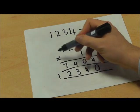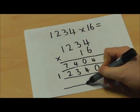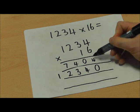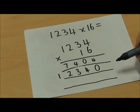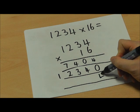I'm now going to use column addition to add together my two answers so that I can complete the calculation. So 4 add 0 equals 4.